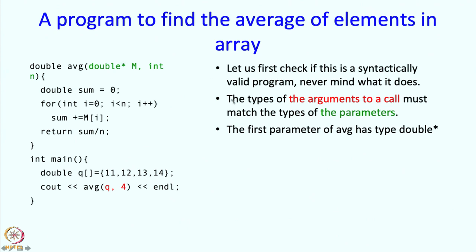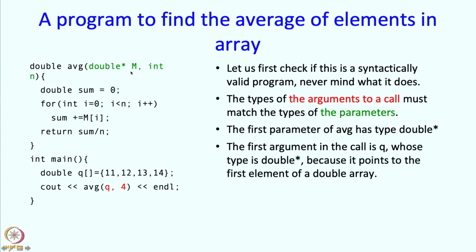Well, the first parameter to average has type double star. The first argument in the call is q and its type is also double star. Why? Because it is the name of an array of doubles and its value is the address of the 0th element and it points to a double element. So, the type is correct.